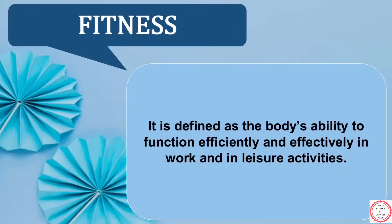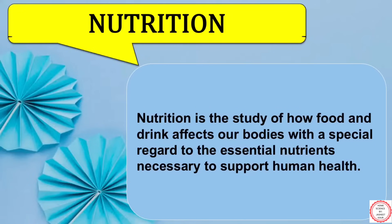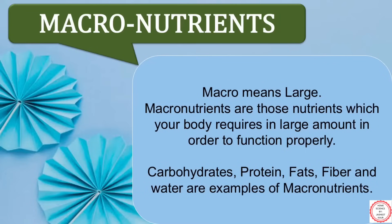Moving on to fitness — it is defined as the body's ability to function efficiently and effectively in work and in leisure activities. Talking about nutrition, it is the study of how food and drinks affect our bodies, especially in the context of the nutrients required for healthy human growth. Macronutrients — macro means large. These are the nutrients which your body requires in large amounts in order to function properly. Examples of macronutrients can be carbohydrates, protein, fats, fiber, and water.